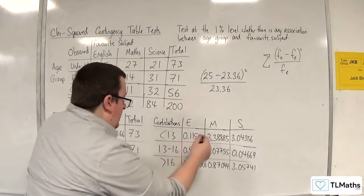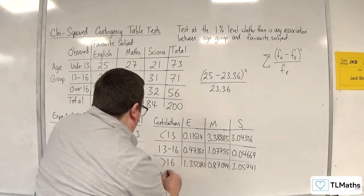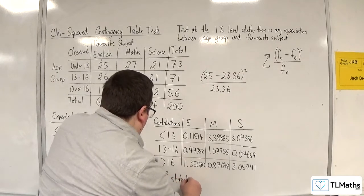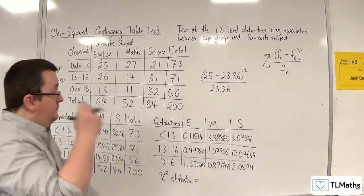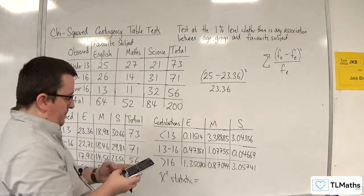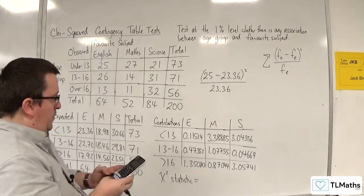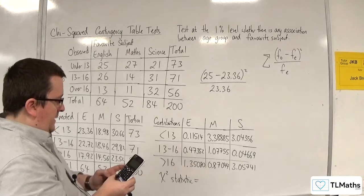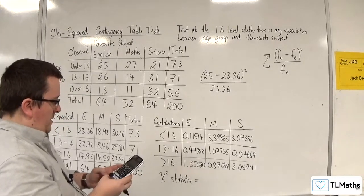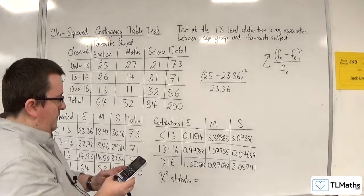Right. So now that I've got all my contributions, I need the chi-squared statistic, which is the sum of them all. So now I've got to add them all together. So 0.11514 plus 3.38885 plus 3.04356.